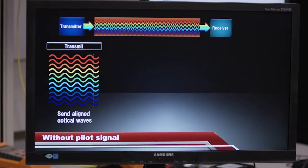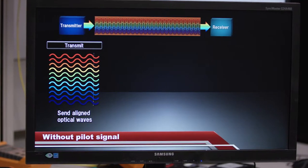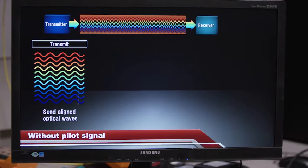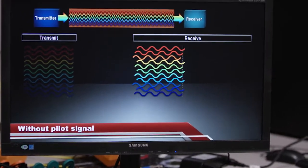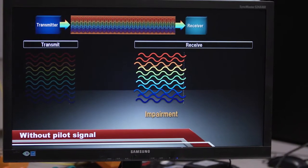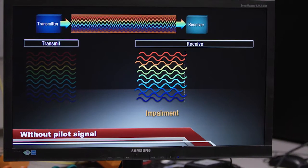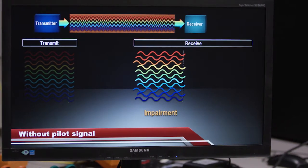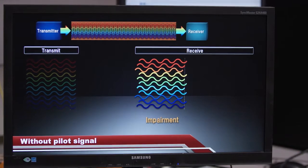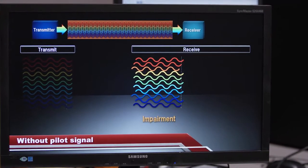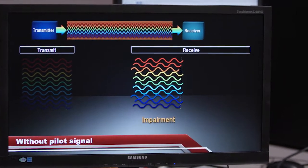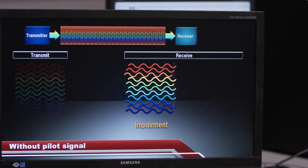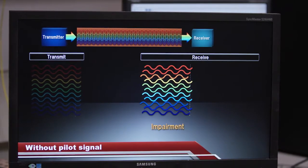So this is really the illustration of the primary problem that we have in this system. When we transmit our 11 sub-channels, we find that they all undergo slightly different impairments. Essentially due to the physical nature of the system, there are some differences in the electrical path and the optical path for each of these different channels.